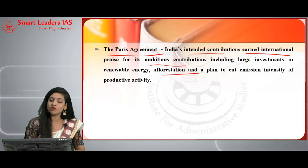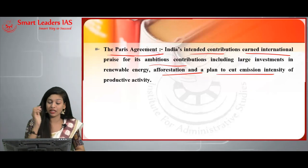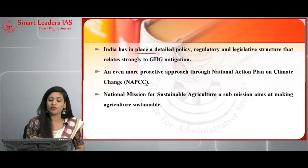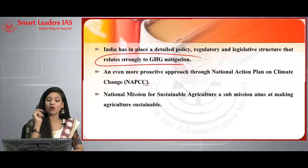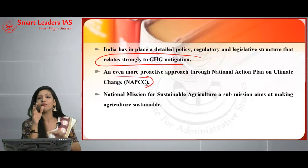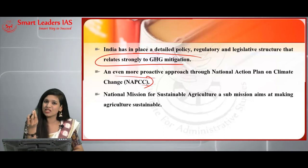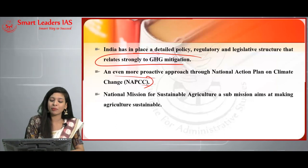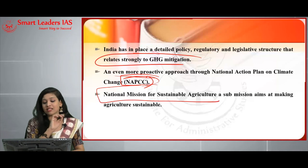India has detailed policies and regulations for GHG mitigation. A proactive approach through the National Action Plan on Climate Change (NAPCC) has been in place; before the Paris Agreement, measures were taken, but after it, more efficient actions were planned. Under the NAPCC, India also has a National Mission for Sustainable Agriculture as a sub-mission, with the aim of making agriculture more sustainable for present and future generations.